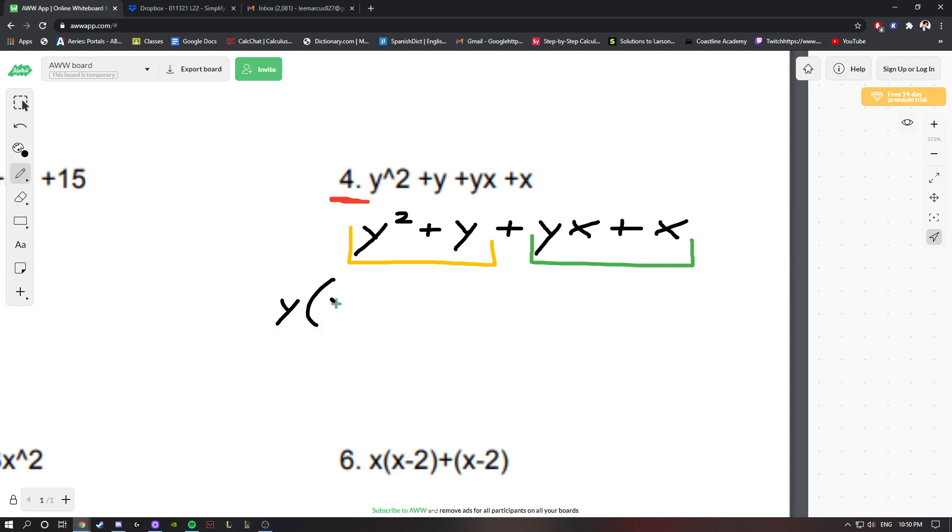This term, y + 1, is inside the parentheses, so that's also what we're looking to factor out from this set in green. If you look at this set of terms, yx + x, we could factor out an x and we're also left with (y + 1), which we're looking for.